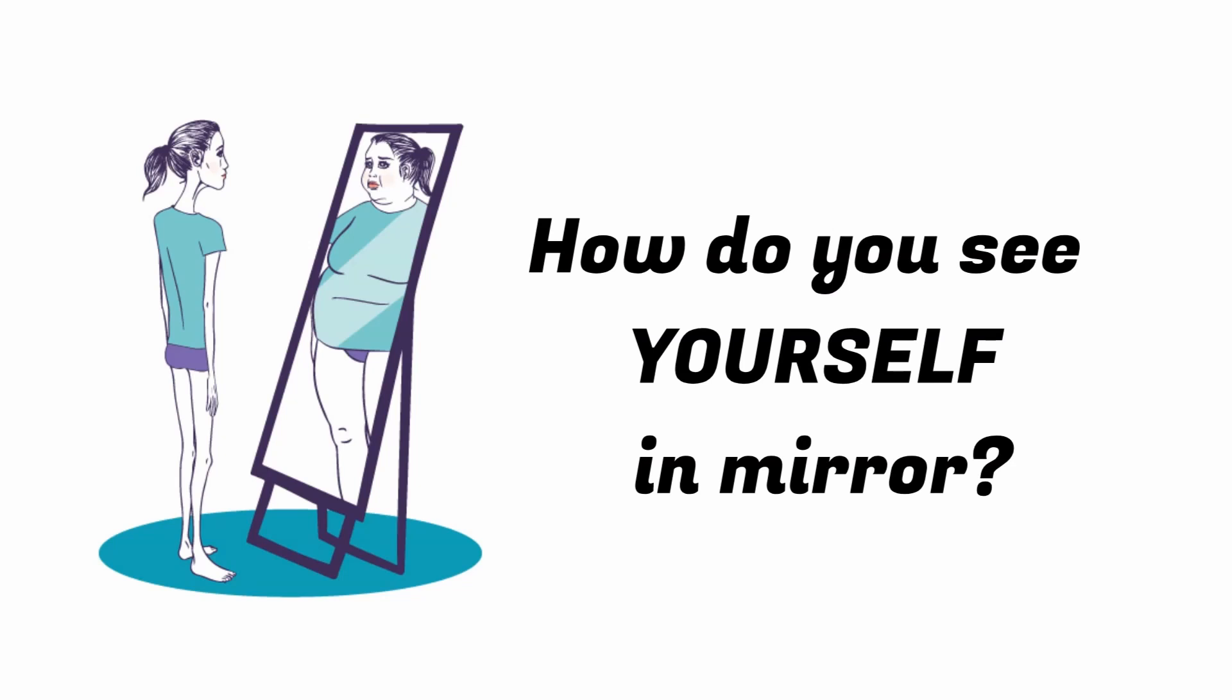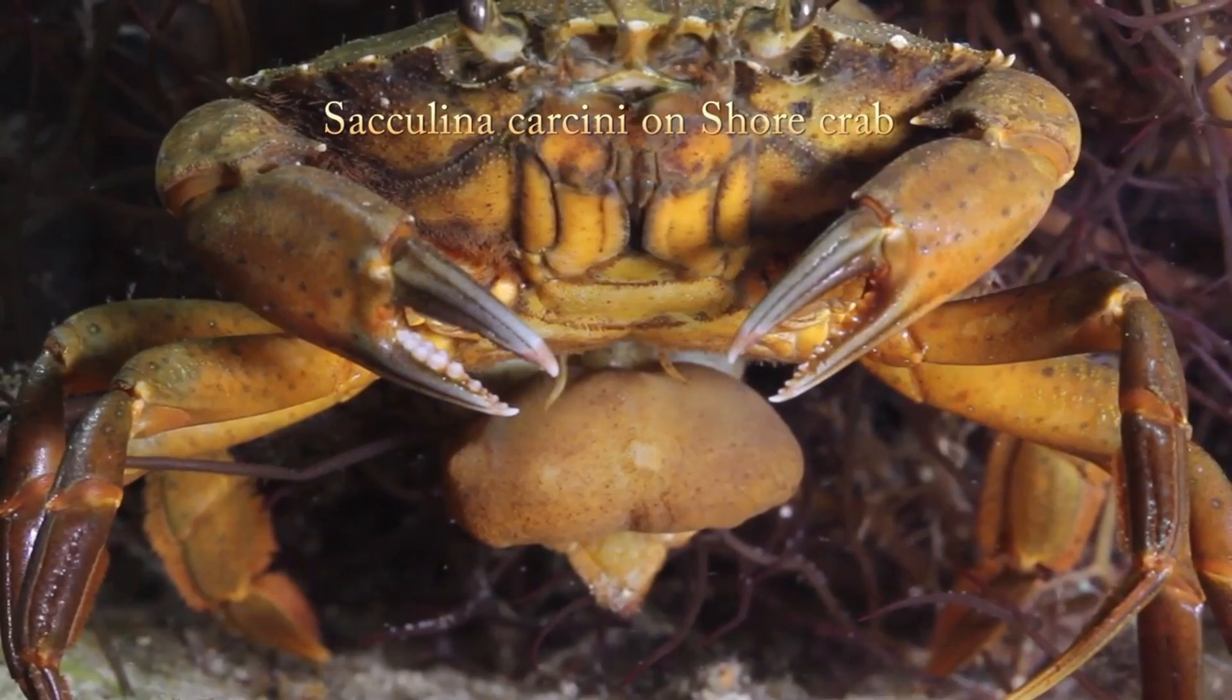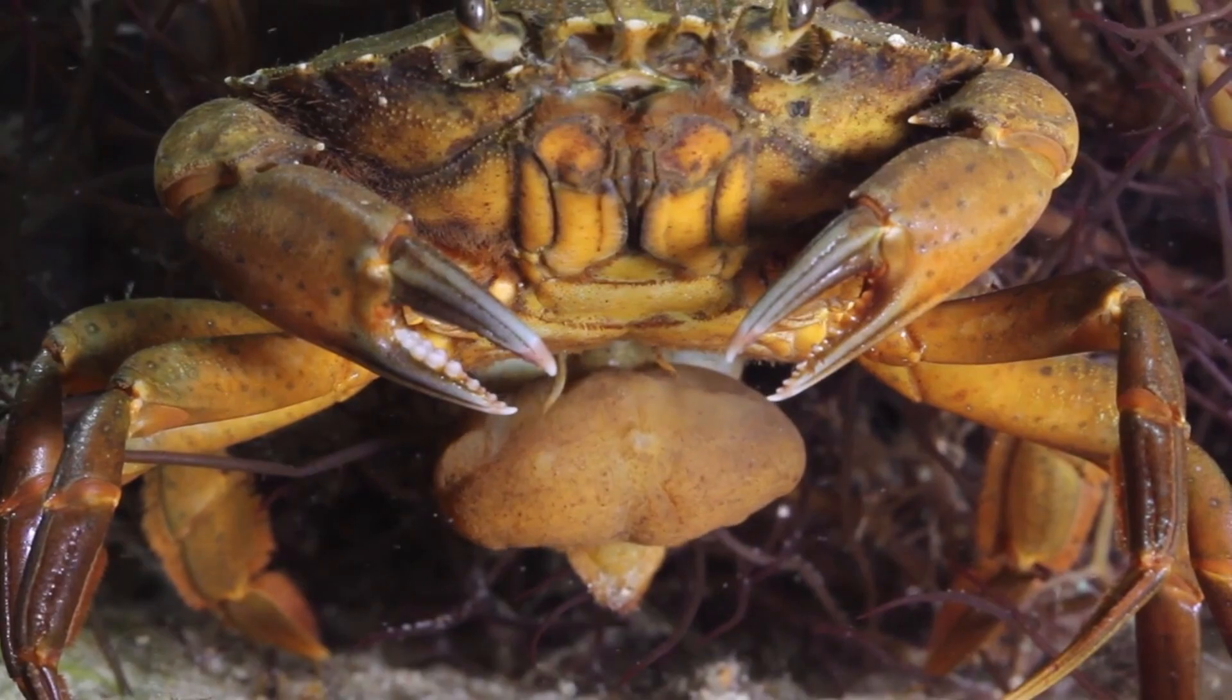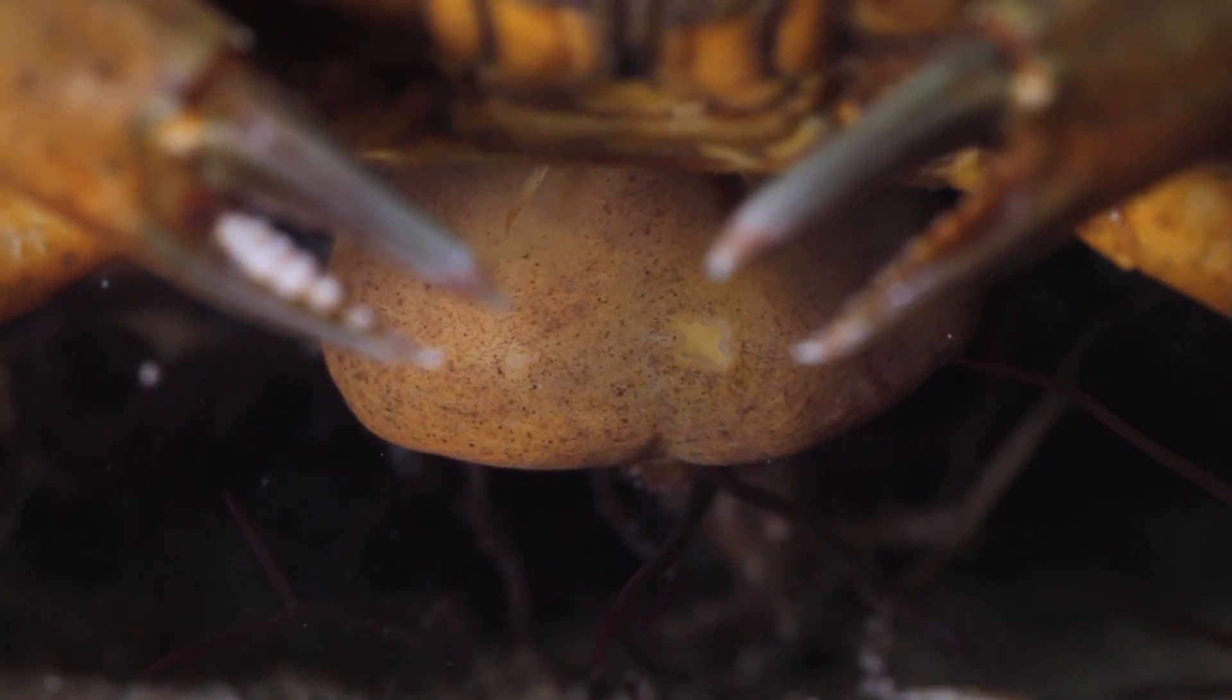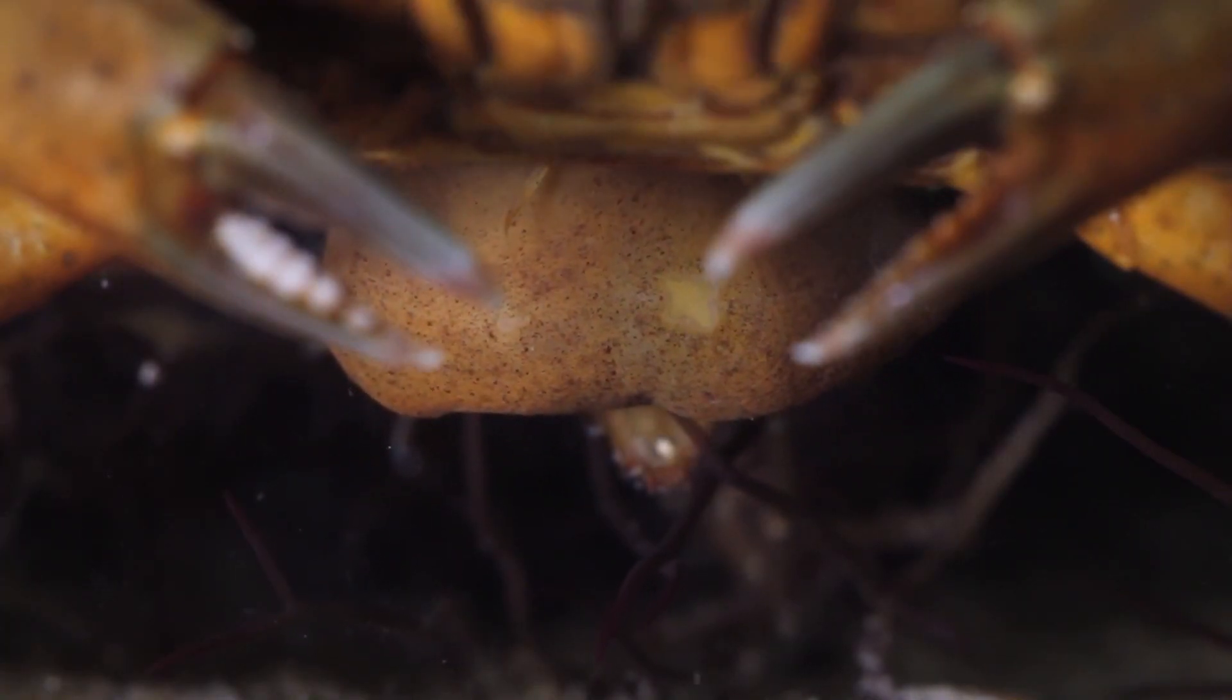Sacculina carcini is a parasite that mainly hosts male king crabs. When the parasite tries to enter the king crab, the crab notices the pinch but ignores it. The parasite gets attached and eats the proteins and fats of the crab, making it weak and tired.